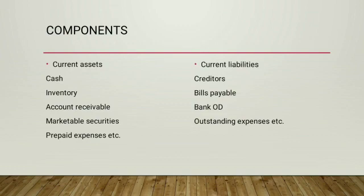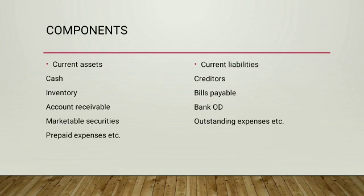The components of working capital are broadly divided into two categories: current assets and current liabilities. Current assets include cash, inventory, accounts receivable, marketable securities, prepaid expenses, etc. Current liabilities include creditors, bills payable, bank overdraft, outstanding expenses, etc. These are all the components of working capital.